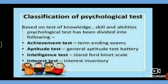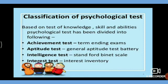The second classification is based on skills, knowledge, and abilities. These include: achievement tests, aptitude tests, intelligence tests, and interest tests. Achievement tests measure knowledge, understanding, or skills in a specific area. They differ from intelligence tests in that they measure how much has been learned, while intelligence tests measure the level of mental development. Schools use these tests to identify students with special education needs and to measure students' progress. An example is term-ending exams.